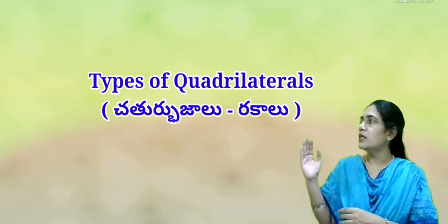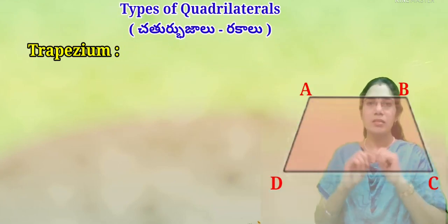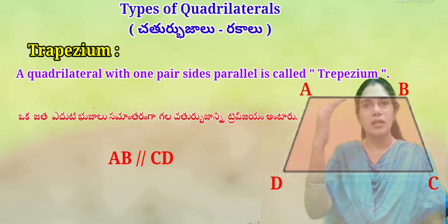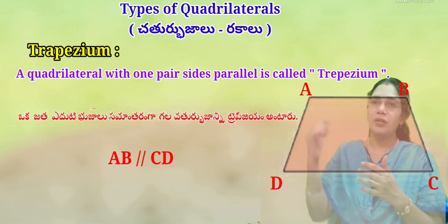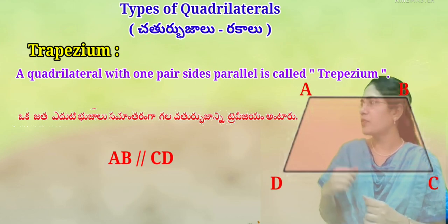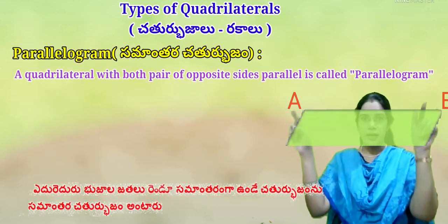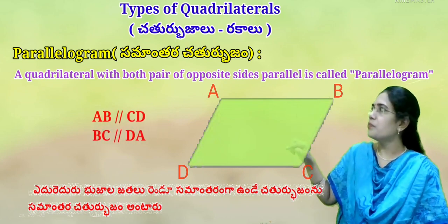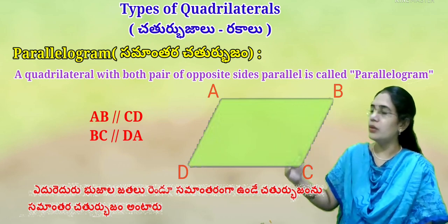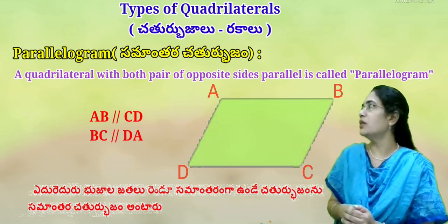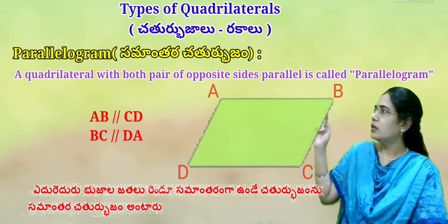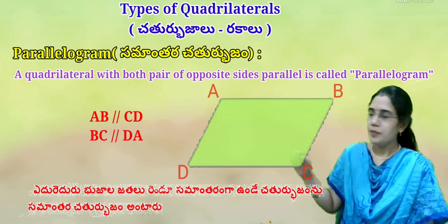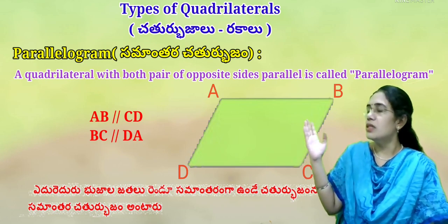Let us know about types of quadrilaterals. Trapezium (Samalamba Chatur Bhujam): a quadrilateral with one pair of sides parallel is called a trapezium. Here, AB is parallel to CD, so it is a trapezium. Parallelogram (Samantara Chatur Bhujam): a quadrilateral with both pairs of opposite sides parallel is called a parallelogram. Here, AB is parallel to CD, and BC is parallel to DA.